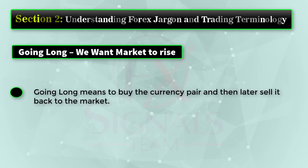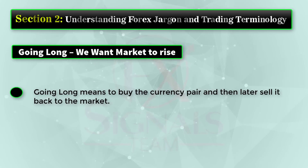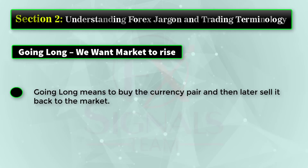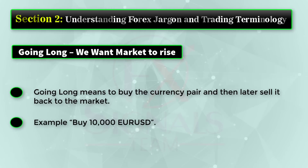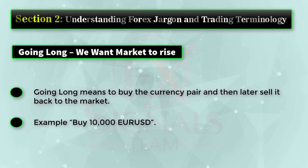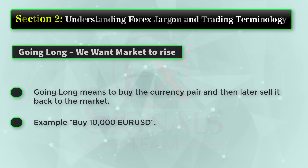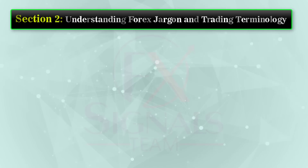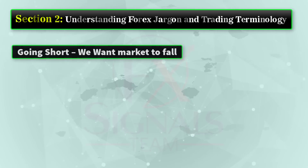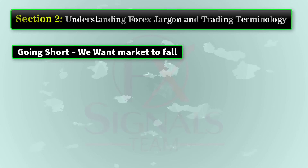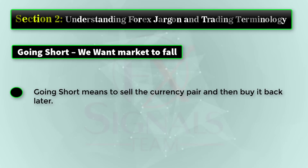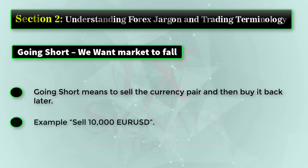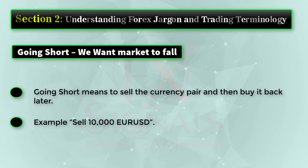Going long means we want the market to rise. Going long means to buy the currency pair and then later sell it back to the market. Example: buy 10,000 EUR/USD. Going short means we want the market to fall. Going short means to sell the currency pair and then buy it back later. Example: sell 10,000 EUR/USD.